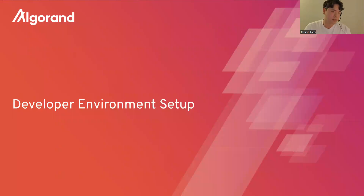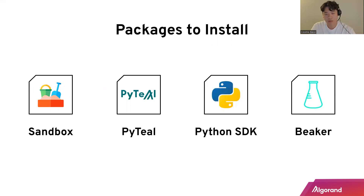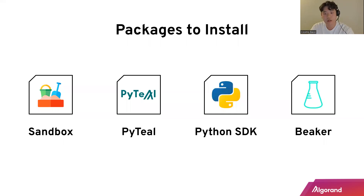Before we dive deeper, let's look at how to set up a developer environment to build with Beaker. You need to install sandbox so you can run a local private network on your machine, install PyTeal and the Python SDK so you can build your smart contract and interact with it, and install Beaker to get the framework.